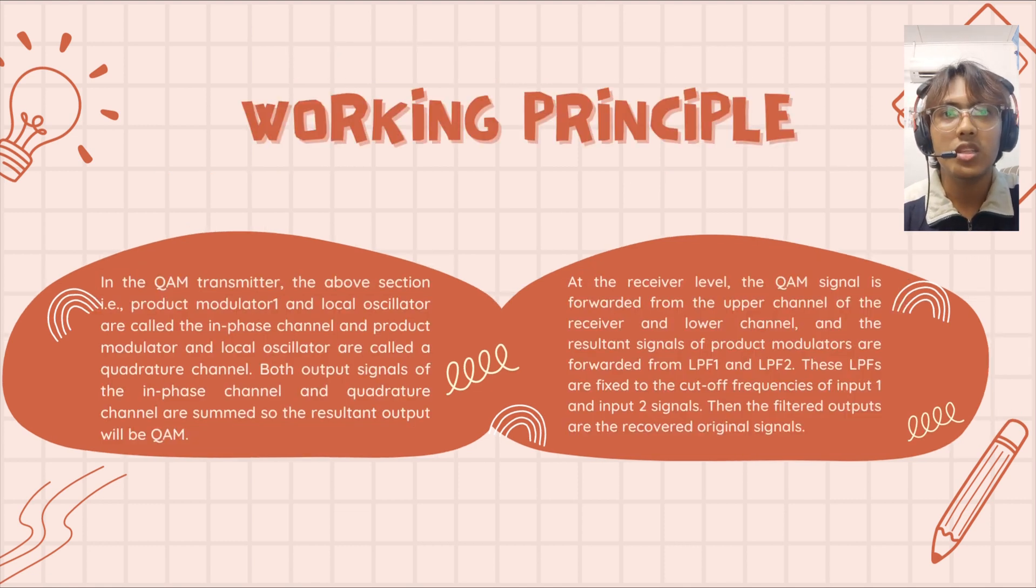In the QAM transmitter, the above section product modulator and local oscillator are called the in-phase channel, and product modulator and local oscillator are called the quadrature channel. Both output signals of the in-phase channel and quadrature channel are summed so the resultant output will be QAM.